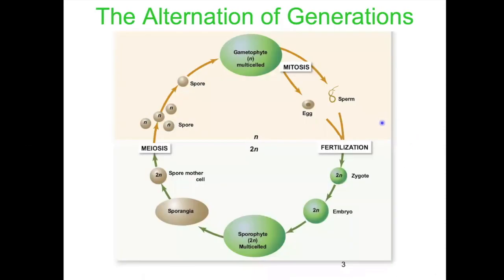We'll start again by reminding ourselves of the plant life cycle — the alternation of generations — and how we have these two different parts: the haploid gametophyte phase and the diploid sporophyte phase. Remembering back, as we consider plant evolution in the earliest plant lineages, the gametophyte was the dominant part of the life cycle, with the sporophyte being dependent on it.